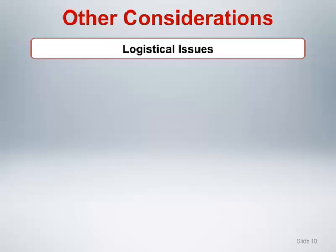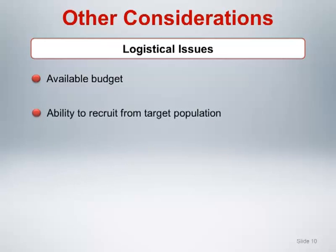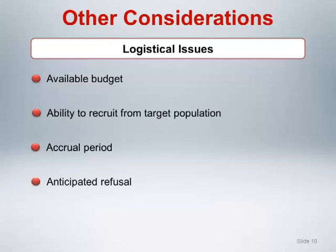These include available budget for the study and cost per patient, ability to recruit from the target population and related recruitment issues, allowable accrual period for recruiting patients, and anticipated refusal rates.